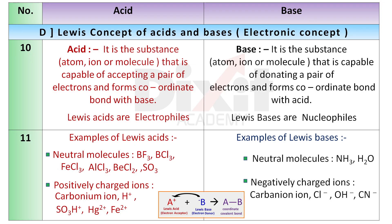Examples of Lewis acids: Neutral molecules like BF3, BCl3, FeCl3, AlCl3, BeCl2, SO3 etc. act as Lewis acids. Positively charged ions like carbonium ion, H+ ion, SO3H+ ion, Hg2+ ion, Fe2+ ion etc. act as Lewis acids.